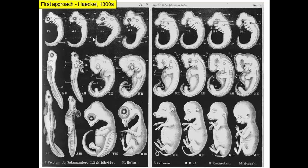Here is a turtle — it starts off looking basically like a salamander and then develops into a turtle. This is a chicken — it starts off looking just like the turtle and develops into a chicken. And then here are four different types of mammals, including humans. They start off looking just like these guys, and then they develop into this. When Haeckel looked at this, he saw that they kind of look a lot like these guys — so it looked to him like they were developing through their evolutionary history.